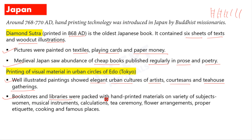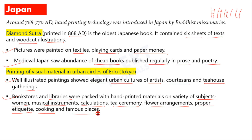Bookstores and libraries were packed with hand-printed materials on different subjects — musical instruments, books related to the tea ceremony, tea parties, flower arrangement, proper etiquettes, manners, cooking, and famous places. Just like today you can go to a market and find a book on almost any subject, there was a variety of printed matter available based on people's demand, and they also had many bookstores and libraries.